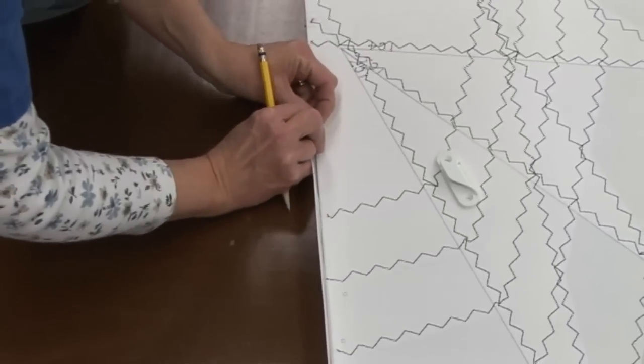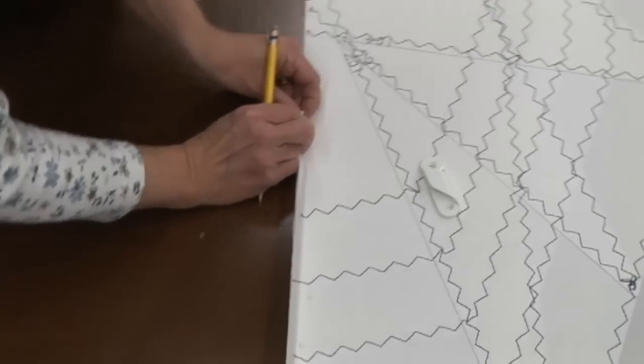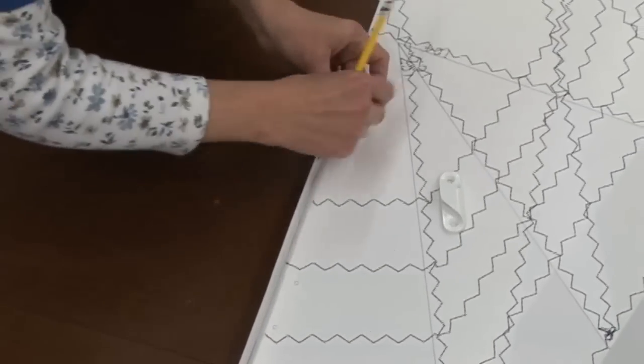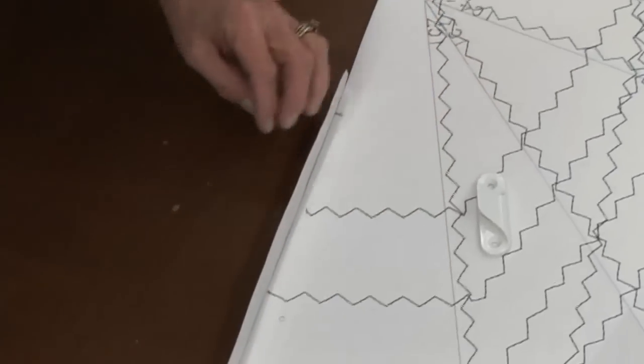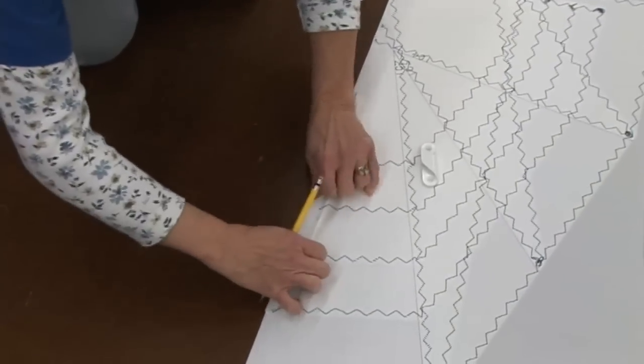She's marked it with a pencil line. Underneath the cleat we want enough opening that we can actually draw the leach line tight. So about 8 inches down below.